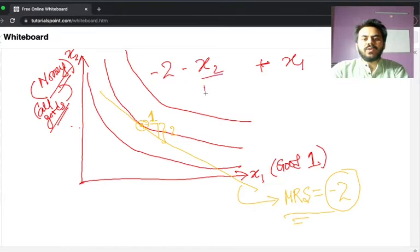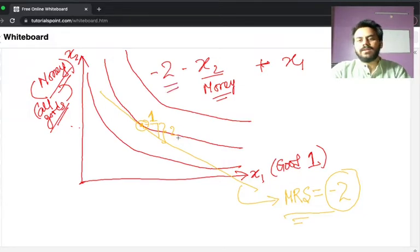So if my good two is money, it means that I'll have to part away with two units of money or currency to get one extra of good one.